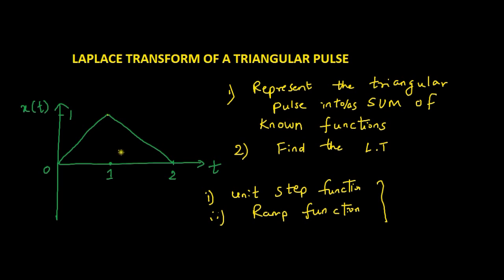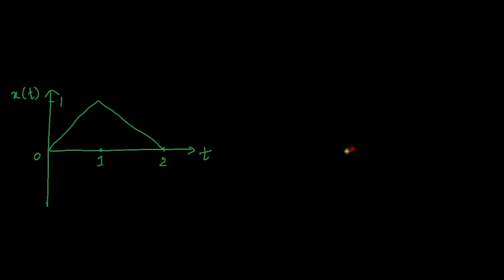As you can see there is a triangular pulse. We can represent this triangular pulse in terms of only the ramp function. That is step one. The second step is finding the Laplace transform of the sum calculated in the first step. We will follow these rules to find the Laplace transform. To find it, you need to represent the triangular pulse in terms of unit step and ramp functions.